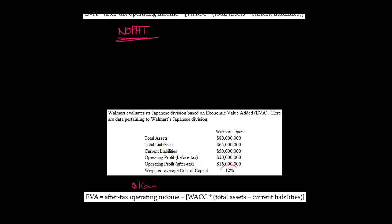We've got the WACC — our weighted average cost of capital is 12% — times total assets, which is $80 million, minus current liabilities. We don't care about total liabilities; current liabilities is $50 million.